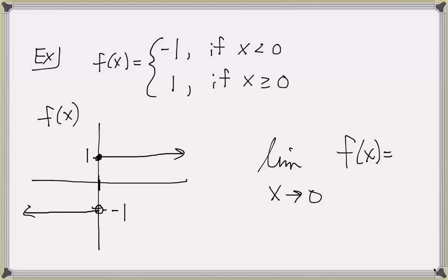Recall this function f of x defined as negative 1 if x is negative, and f of x equals positive 1 if x is greater than or equal to 0. This looks like a horizontal line broken in half — half at height negative 1, and to the right of the y-axis, the horizontal line is at height positive 1. We saw that the limit as x approaches 0 of f of x does not exist, because the function is not approaching one single value as x gets closer and closer to 0.